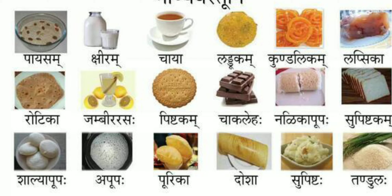In this lesson you can easily see all the three genders. Payasam and Kshiram belong to Napumsakalingaha, because the words end with the 'M' pronunciation. The third word, Chaya, belongs to Strilingaha — feminine gender — because the word ends with 'A'. Laddukam and Kundalikam also belong to Napumsakalingaha. Lapsika belongs to Strilingaha — feminine gender.